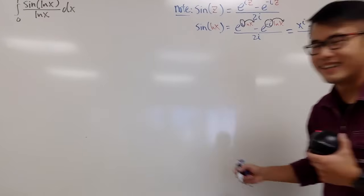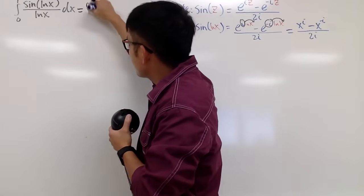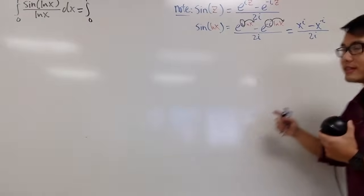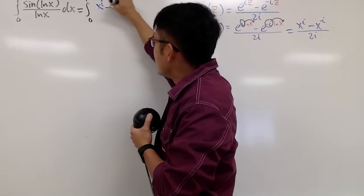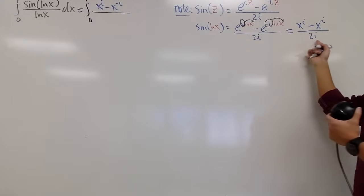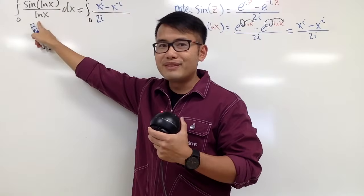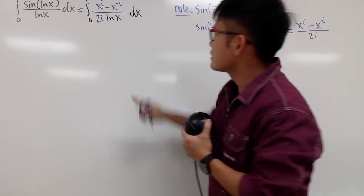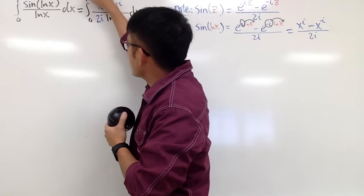So this right here is equal to the integral from 0 to 1. On the top we have x to the i power minus x to the negative i power, all over 2i, and don't forget we still have this additional ln(x). So we are in the x world for now, and this is the integral from 0 to 1.